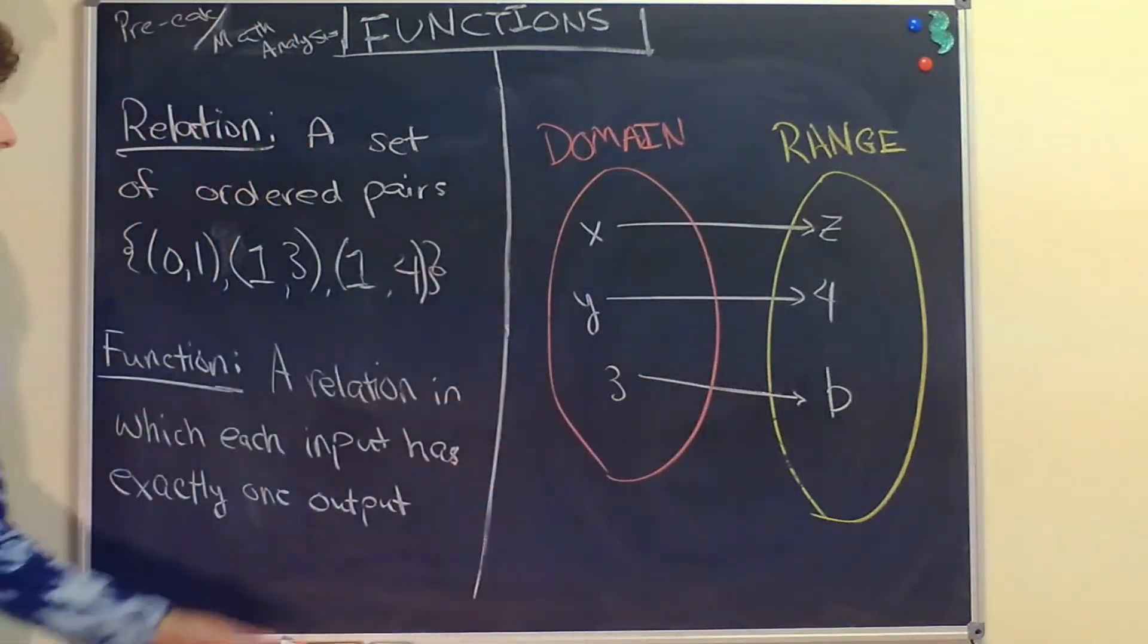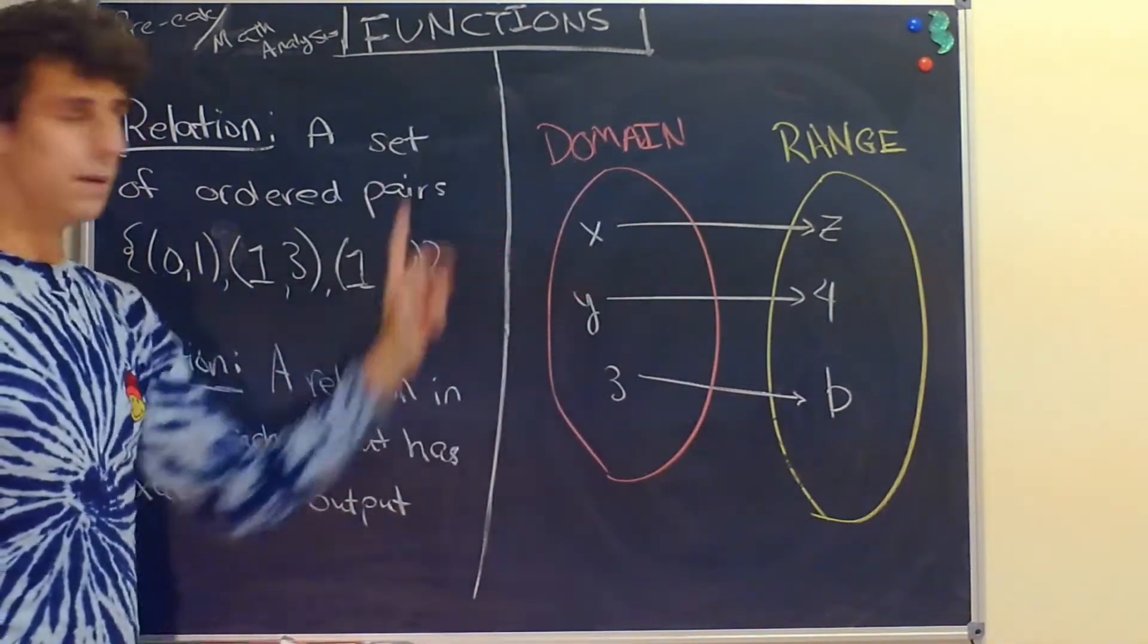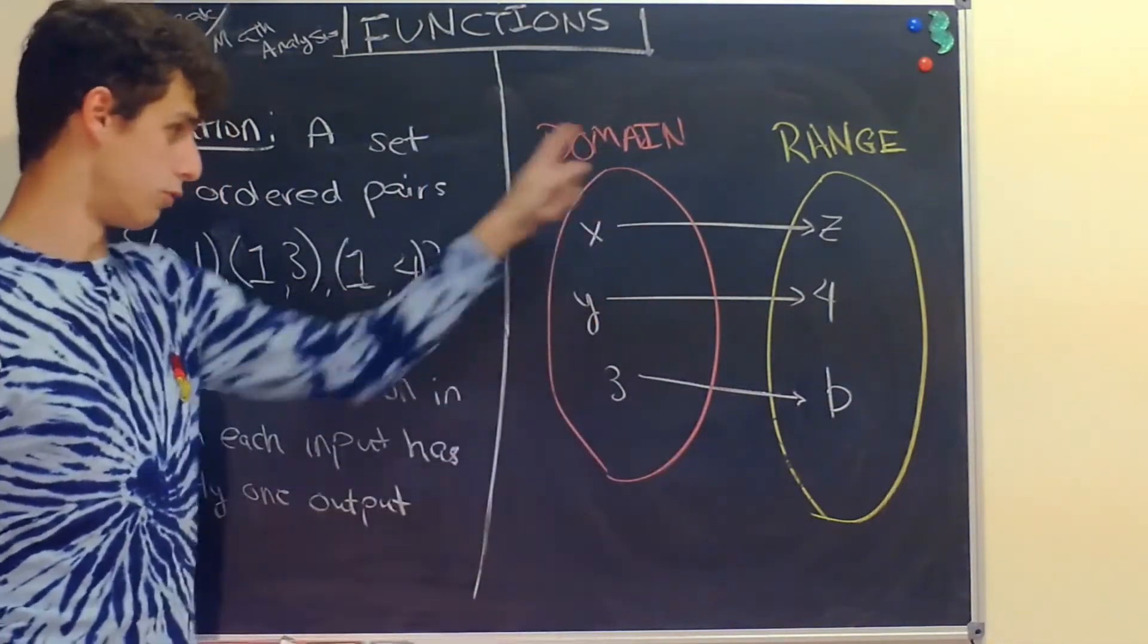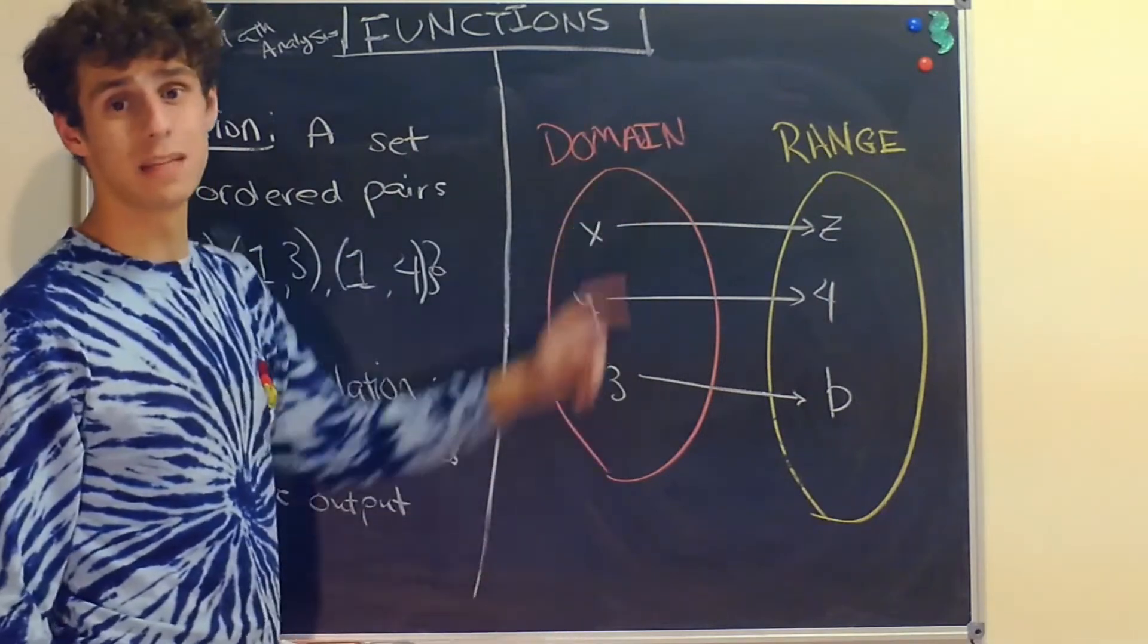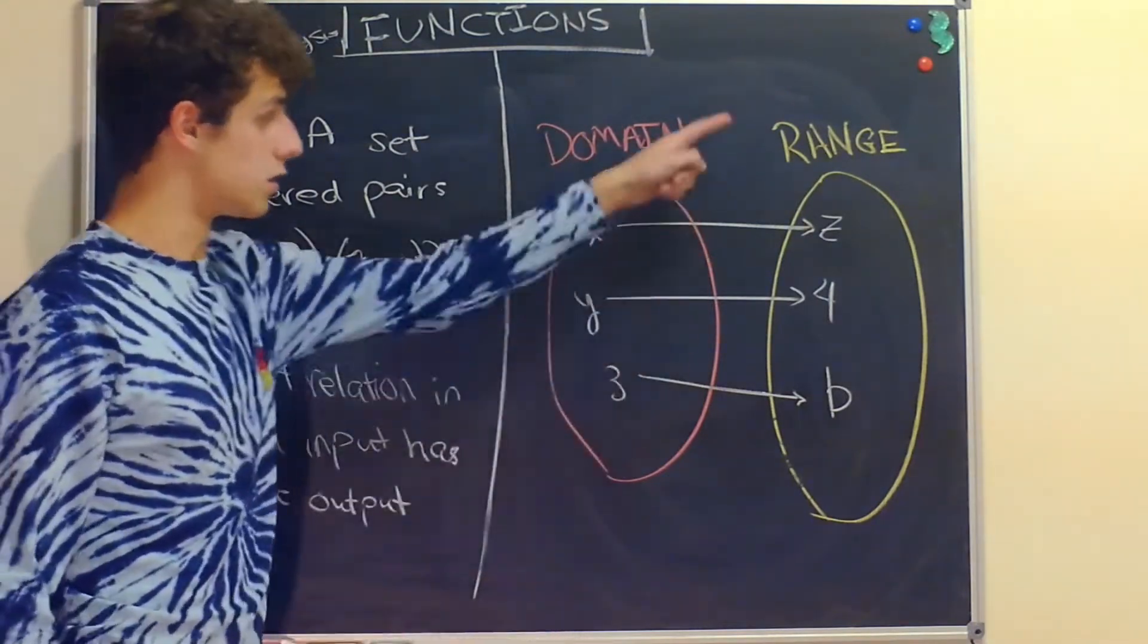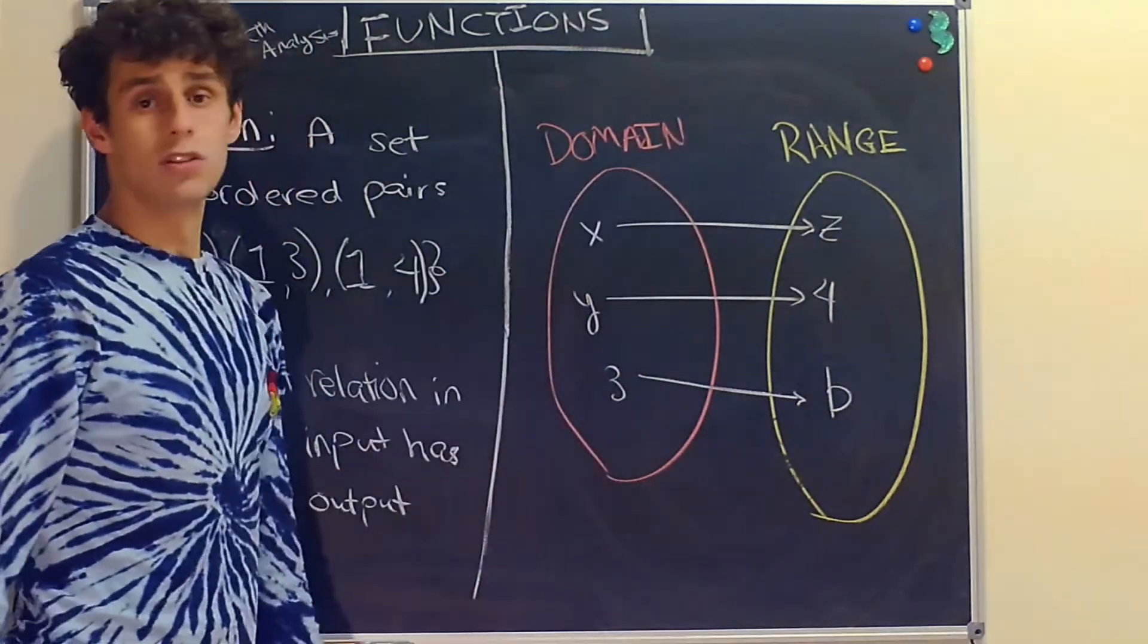The domain of a function is the set of all inputs. The domain here is circled in red—these are all our input values. The range is the set of all output values, so z, 4, and b are circled in yellow.